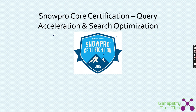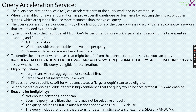Query acceleration is a pretty new feature from Snowflake — as of this recording in May 2024 — and it is part of the SnowPro Core Study Guide. A query acceleration service, aka QAS, can accelerate parts of the query workload in a warehouse. When enabled for a warehouse, it can improve overall warehouse performance by reducing the impact of outlier queries, which are queries that use more resources than a typical query.